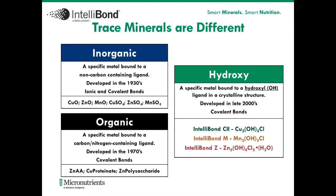Inorganic sources are a specific mineral bound to a non-carbon containing ligand. Examples of this would be copper oxide, zinc oxide, copper sulfate, and manganese sulfate. These inorganic trace minerals utilize both ionic and covalent bonds. In general, ionic bonds are weak and allow the mineral to disassociate quickly, while covalent bonds are stronger and allow the mineral to hold together tighter. These inorganic sources were developed in the 1930s and are still used today.